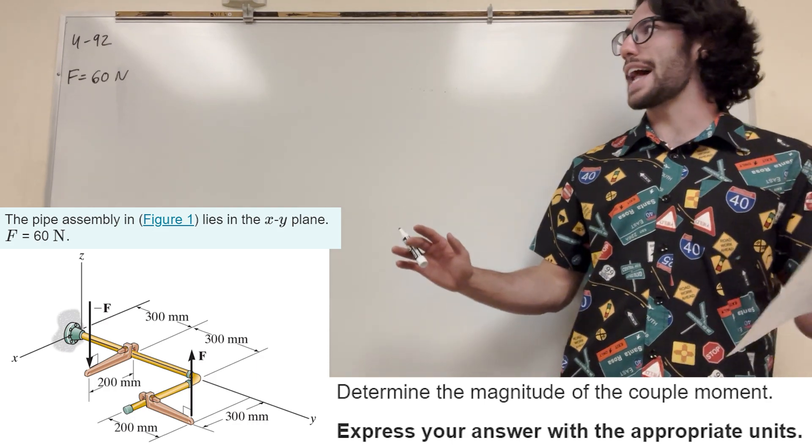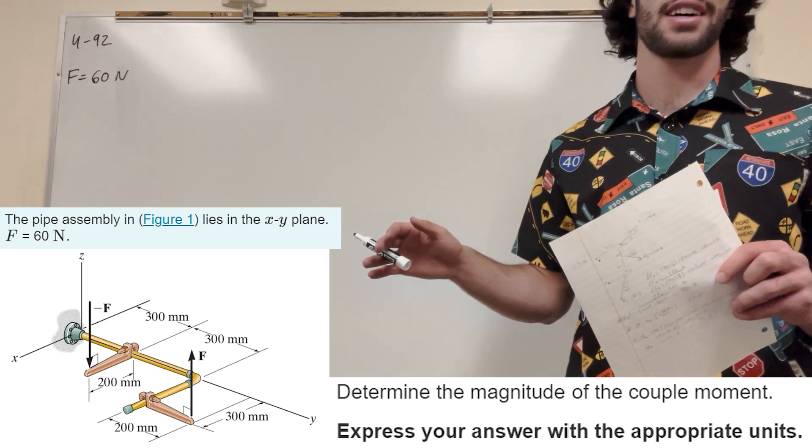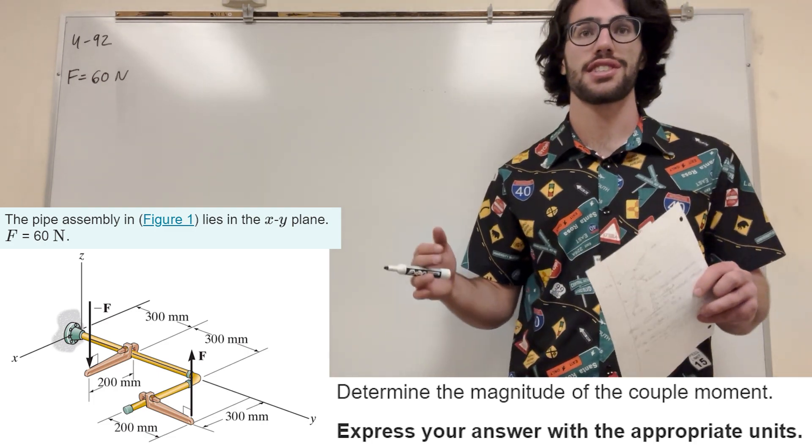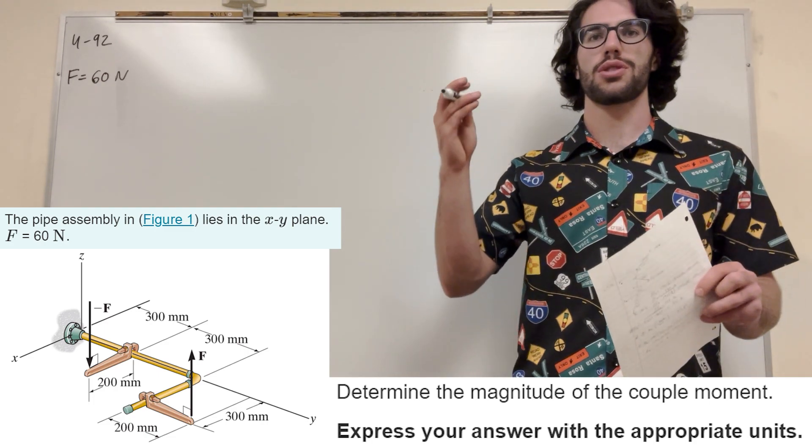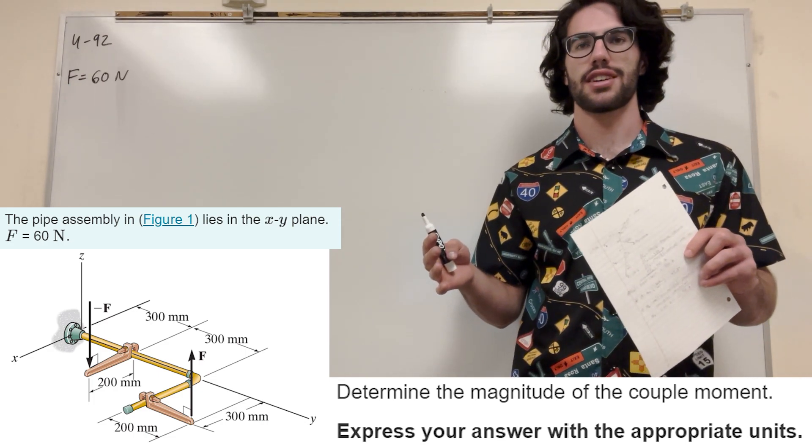What's up Calvin gang? Alright, so we got this statics problem here. So we have this pipe assembly, and it says that the force is 60 newtons. So each one of these forces are pushing in opposite directions, and what that means is we have a couple force.